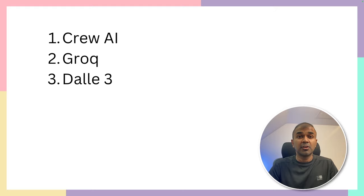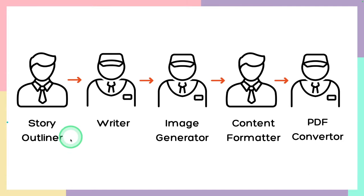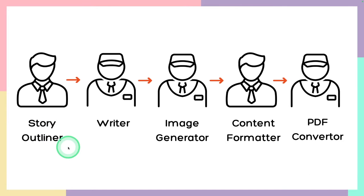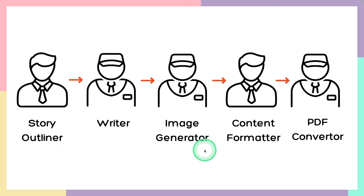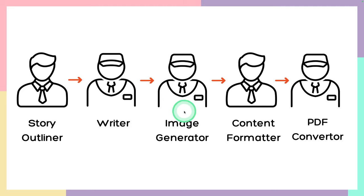Using Crew AI for creating AI agents, using Grok to run the large language model Mixtral, and finally DALL-E 3 to generate images. In this we have the story outliner agent writing the outline, then the writer agent to write the story, then the image generator agent to generate image illustrations, and then it is formatted and converted to PDF using these agents.